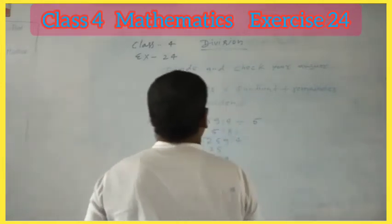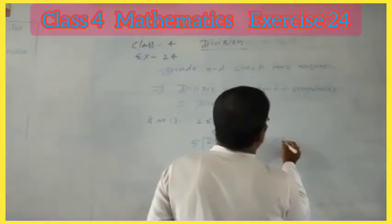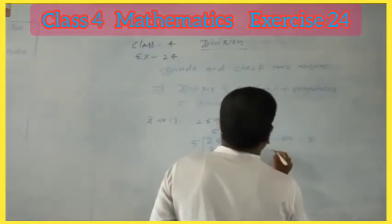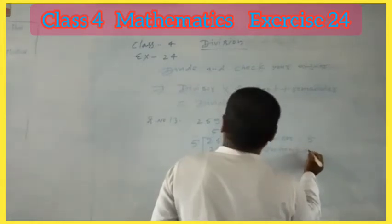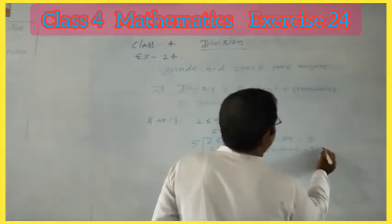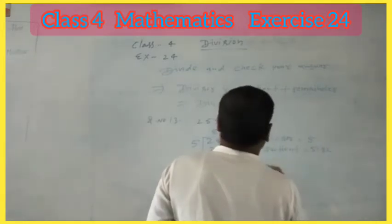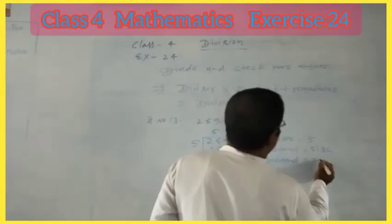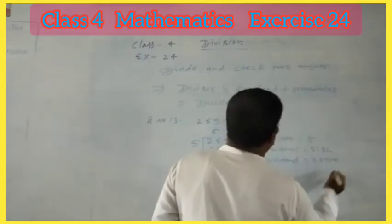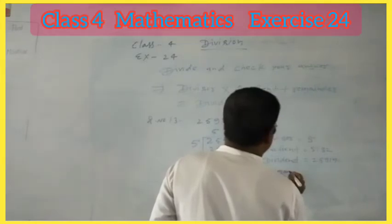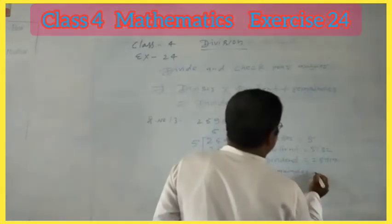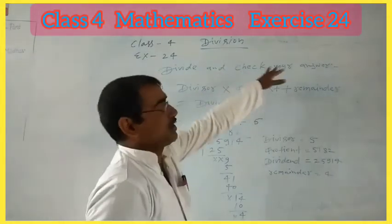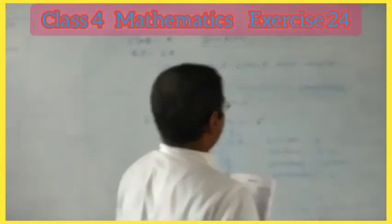So here, the divisor is 5, the quotient is 5,182, the dividend is 25,914, and the remainder is 4. Also, the question says divide and check your answer, so I will check.